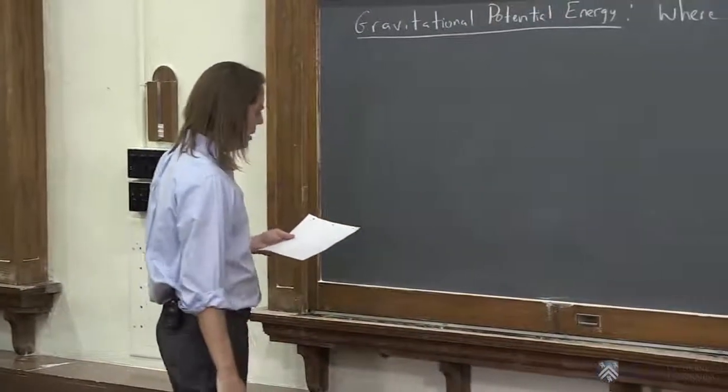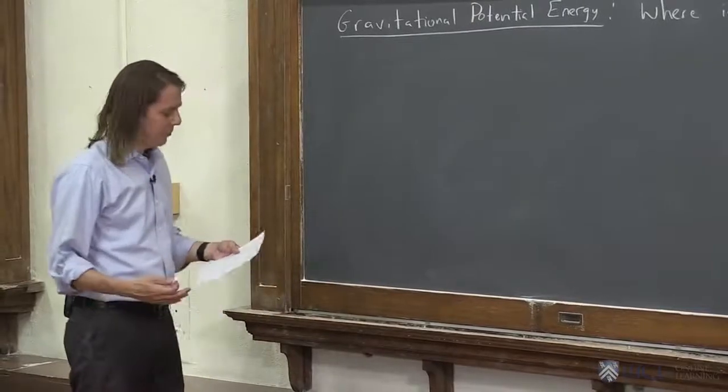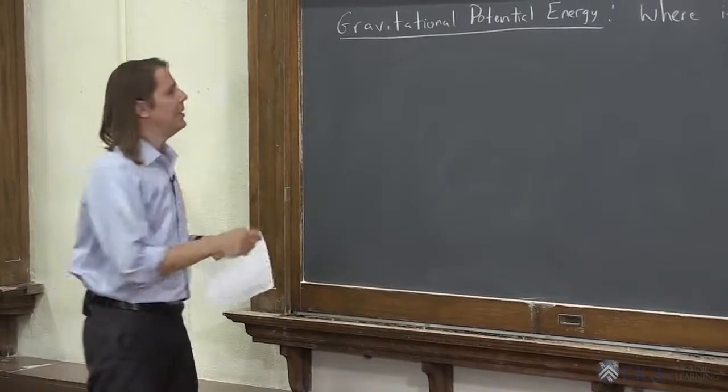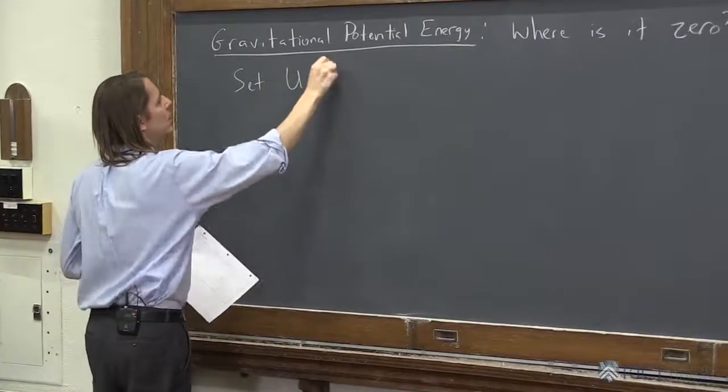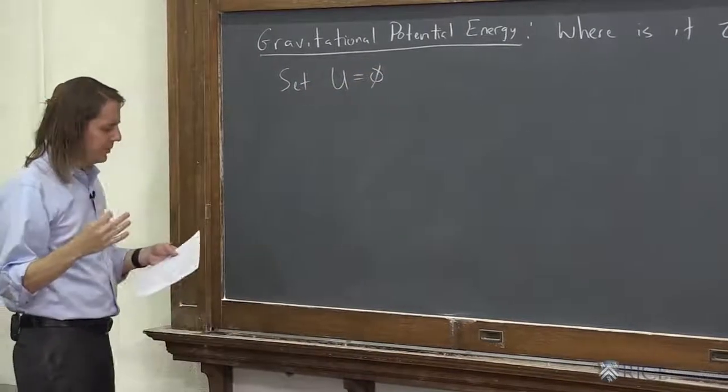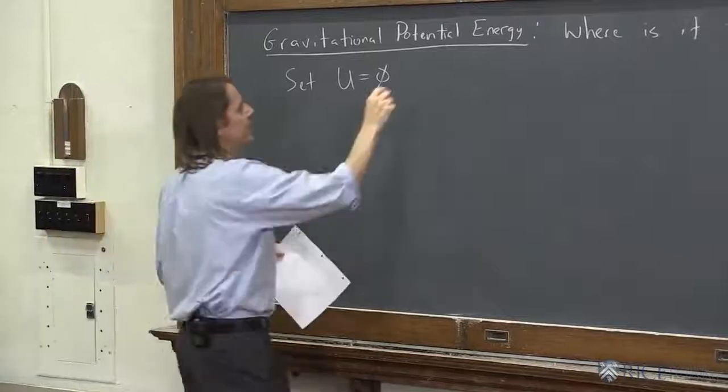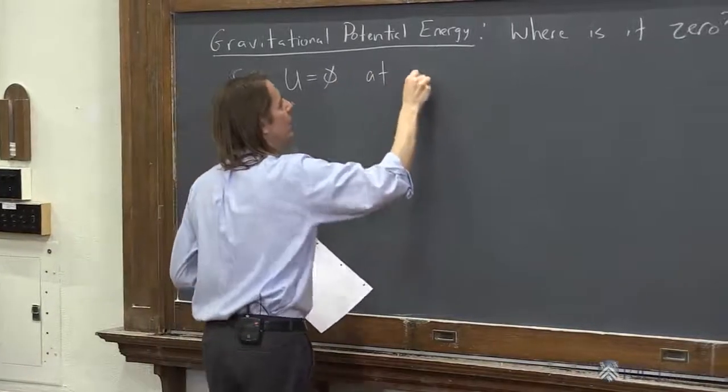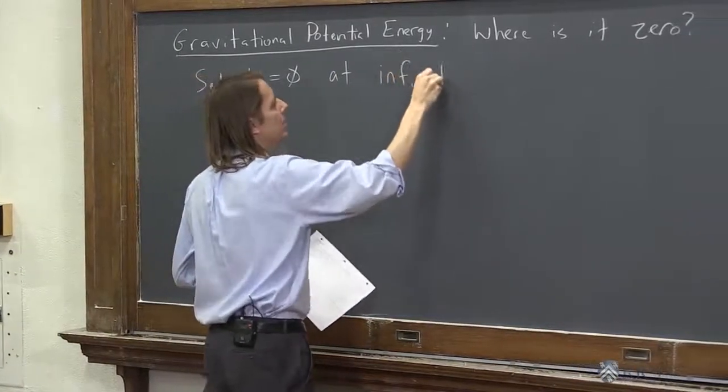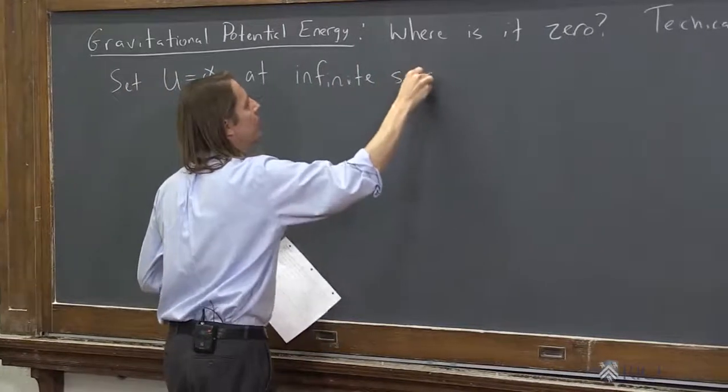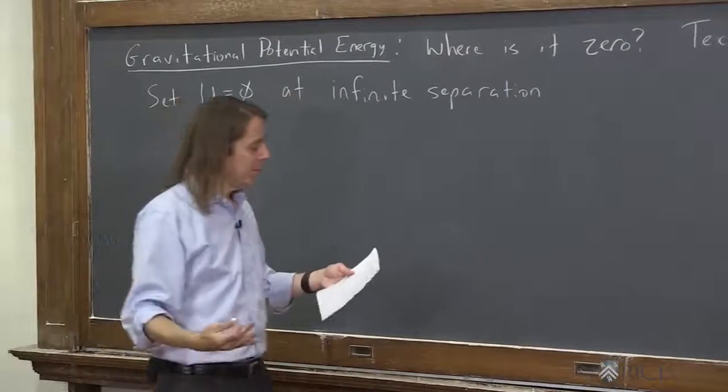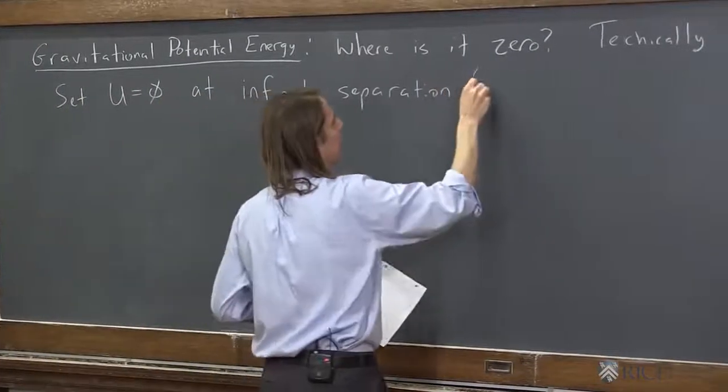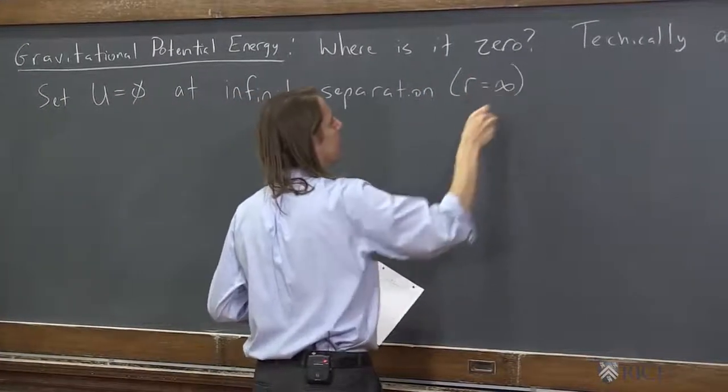There's something a little more universal for universal gravitation. And you can say let's set u equal to zero, the absolute potential equal to zero, at infinite separation. Because after all, that's where the gravitational interaction is basically finished. Things are infinitely far apart. The force goes to zero. So by that, we mean r equals infinity.